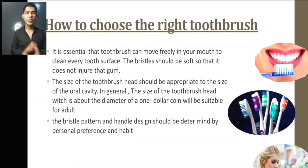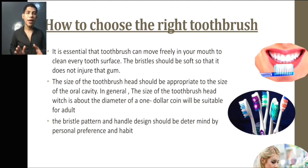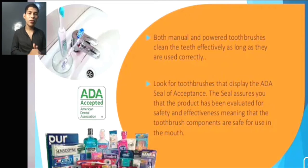How to use the right toothbrush: the toothbrush should be small enough to move freely in the mouth to clean every tooth surface. The bristles should be soft enough not to injure the gum. The size of the toothbrush should be appropriate to the size of the oral cavity. In general, a toothbrush the diameter of a dollar coin will be suitable for adults. The bristle and handle design should be determined by personal preference and habits. Look for a toothbrush displaying the ADA seal of acceptance, which assures that the product has been evaluated for safety and effectiveness and is safe for use in the mouth.